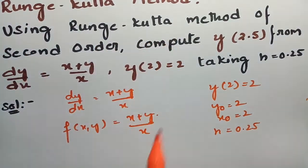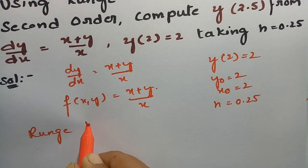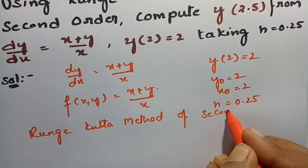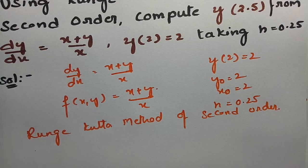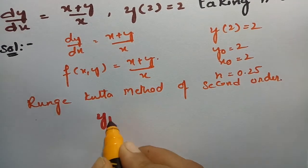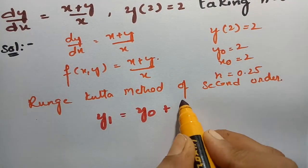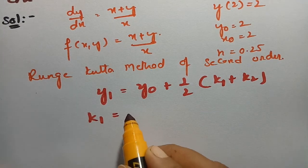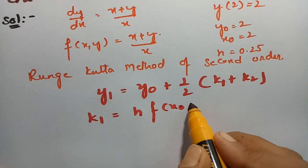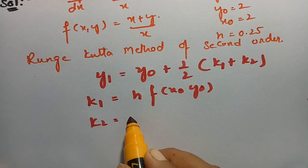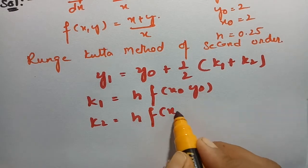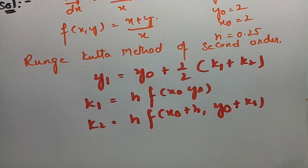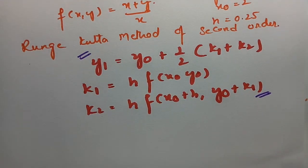Now we have to use the Runge-Kutta method. According to the RK second order method, the formula is: y₁ = y₀ + (1/2)(k₁ + k₂). What are k₁ and k₂? We find k₁ = h · f(x₀, y₀), and k₂ = h · f(x₀ + h, y₀ + k₁). We have to substitute all these values according to the RK method of second order.